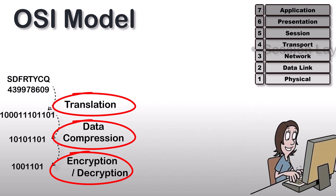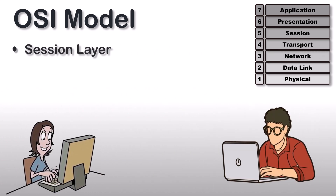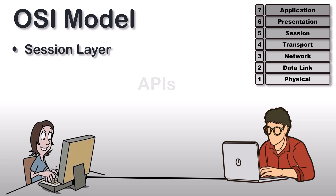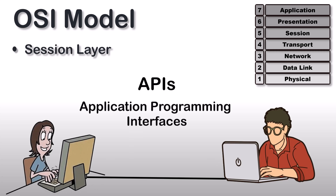After the presentation layer, the session layer comes into play. The session layer helps applications to establish and maintain a safe and secure connection between sender and receiver. It makes possible the sending and receiving of data along with an established connection or session. The session layer uses APIs, or application programming interfaces, which allow applications on different computers to communicate with each other.